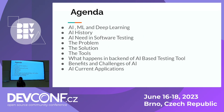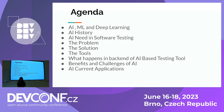This is the agenda. We will talk about what exactly AI, ML, and deep learning is. We will talk about AI history, why we need AI in software testing, the problem, the solution, the tool, what is going to happen at the backend of an AI-based testing tool, benefits and challenges of AI, and AI's current applications. Let's begin.